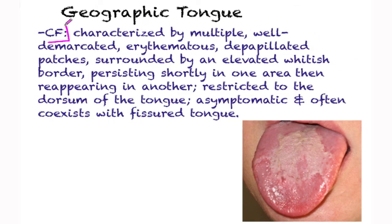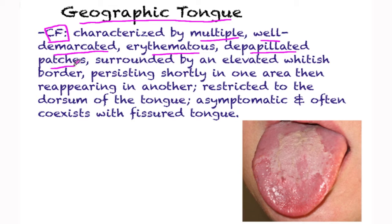The clinical features of geographic tongue are multiple, well-demarcated, erythematous, depapillated patches, surrounded by an elevated whitish border, persisting shortly in one area and then reappearing in another.